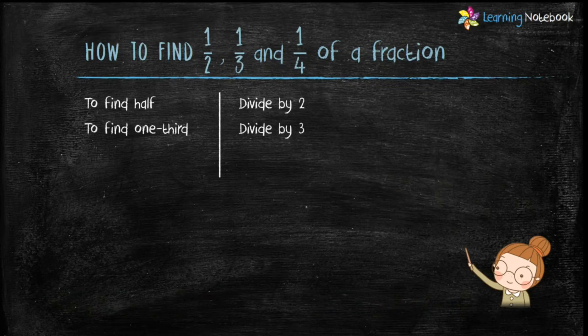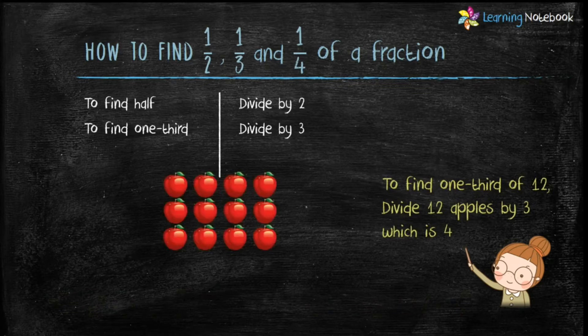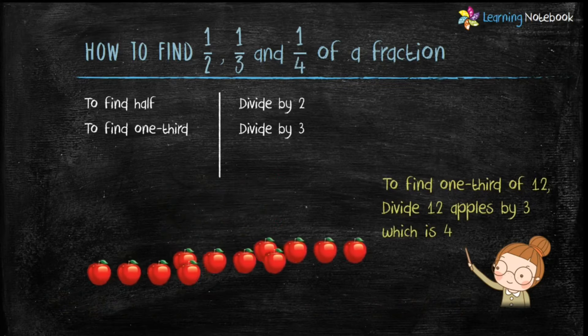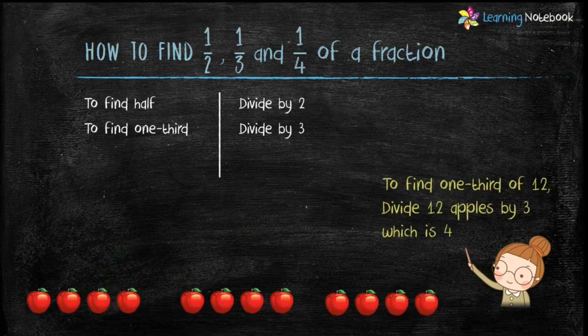Similarly, to find one-third of a number, divide by 3. For example, to find one-third of 12 apples, divide 12 by 3. We get 4.